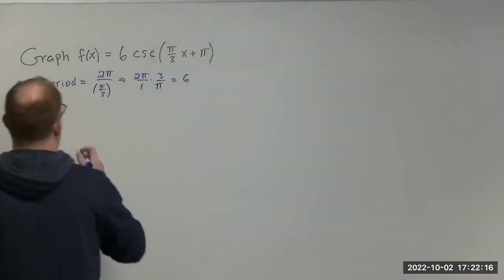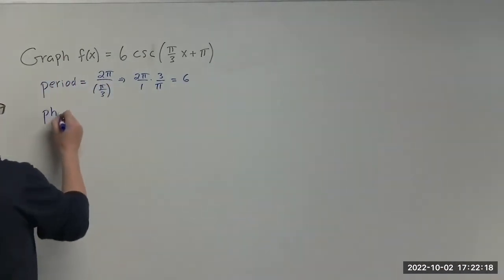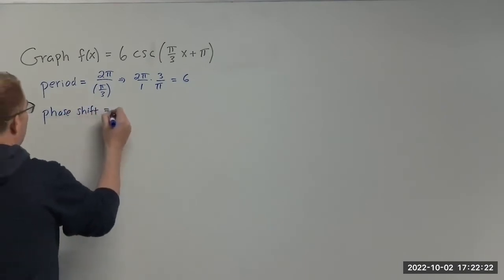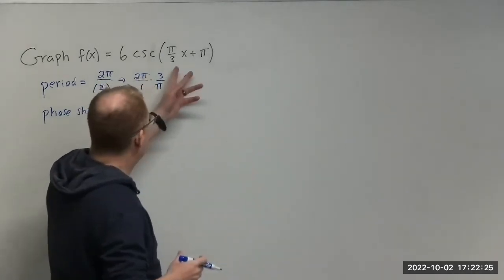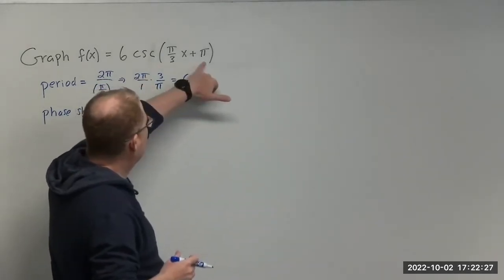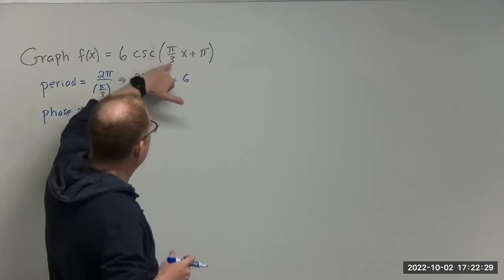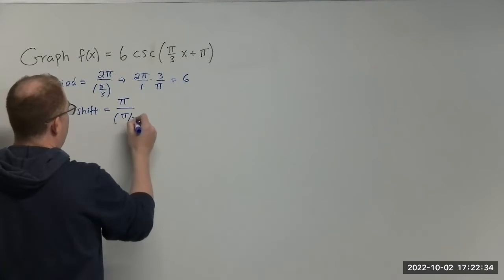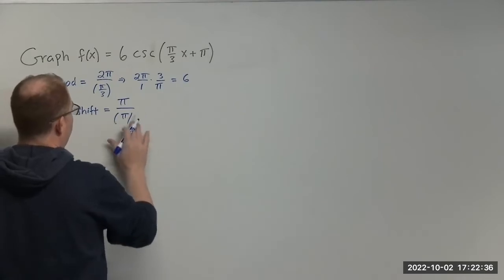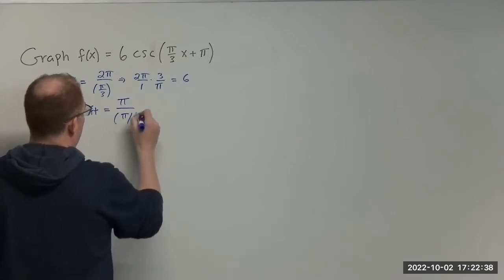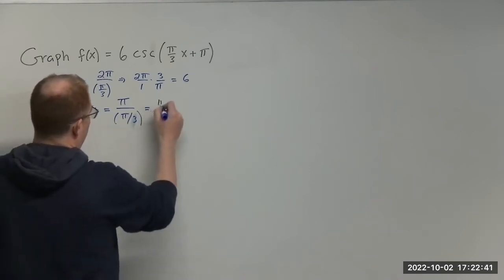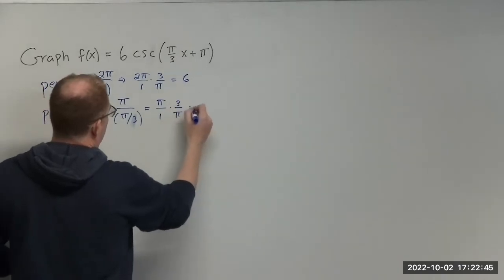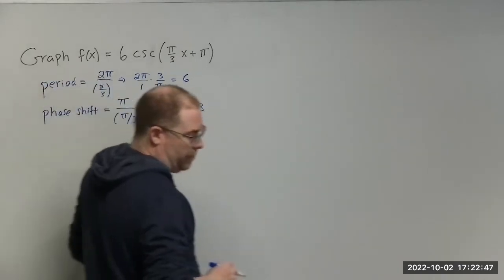The next thing is to determine the phase shift. To get the phase shift, you take the constant value and divide it by whatever is in front of x. So this is going to be pi divided by pi over 3.